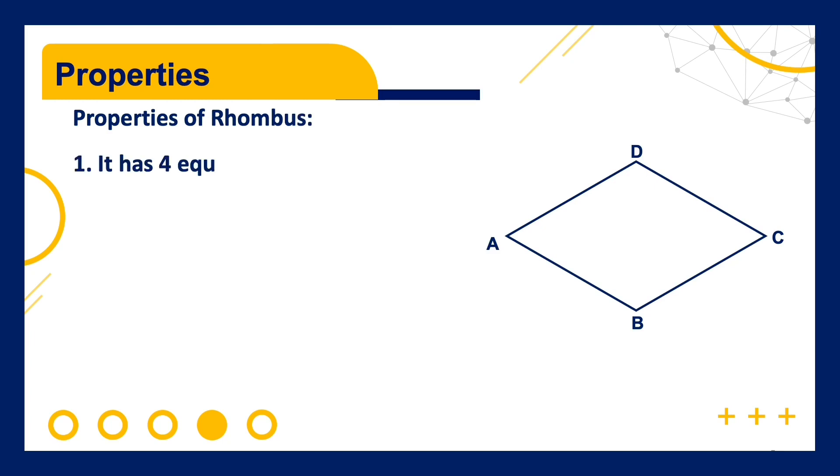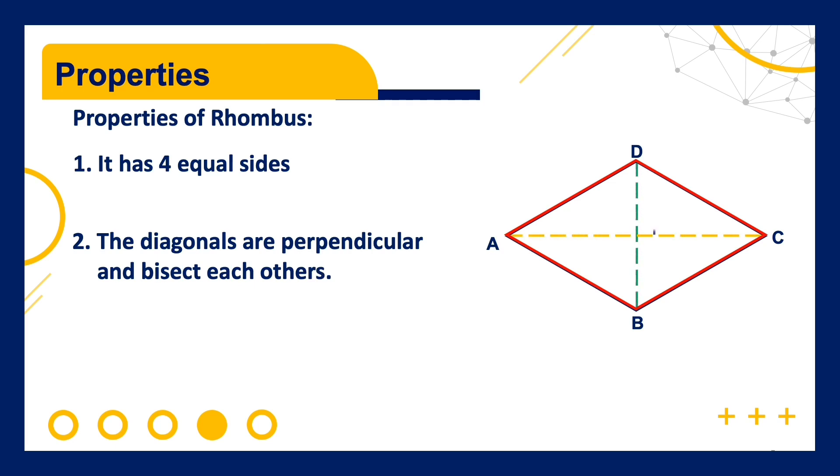The properties of rhombus. Number one, it has four equal sides. Number two, the diagonals are perpendicular and bisect each other.